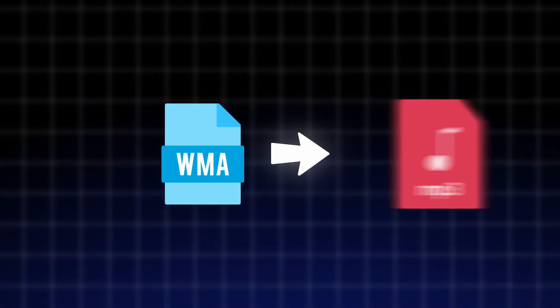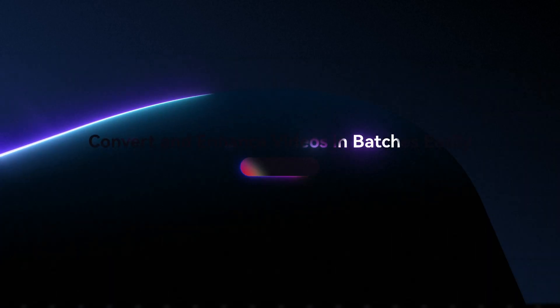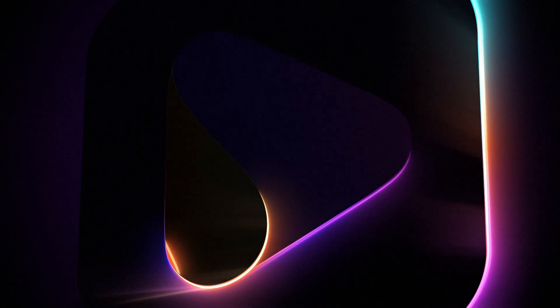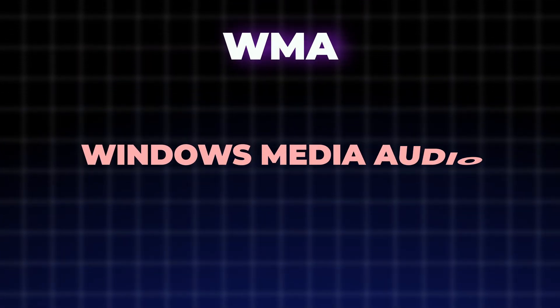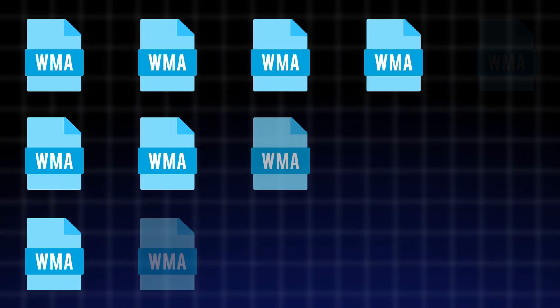How to convert WMA files to MP3 the quickest way with the Uniconverter 16. Hello everyone, Dumpsphere from Wondershare Uniconverter. WMA files are Windows Media file format and it's a good little format, but it's not as broadly supported as the well-known MP3. So when you're in need of converting a lot of WMA files to MP3, it's best to use a proper converter. Converting WMA files to MP3 with the Uniconverter 16 is very simple and fast.